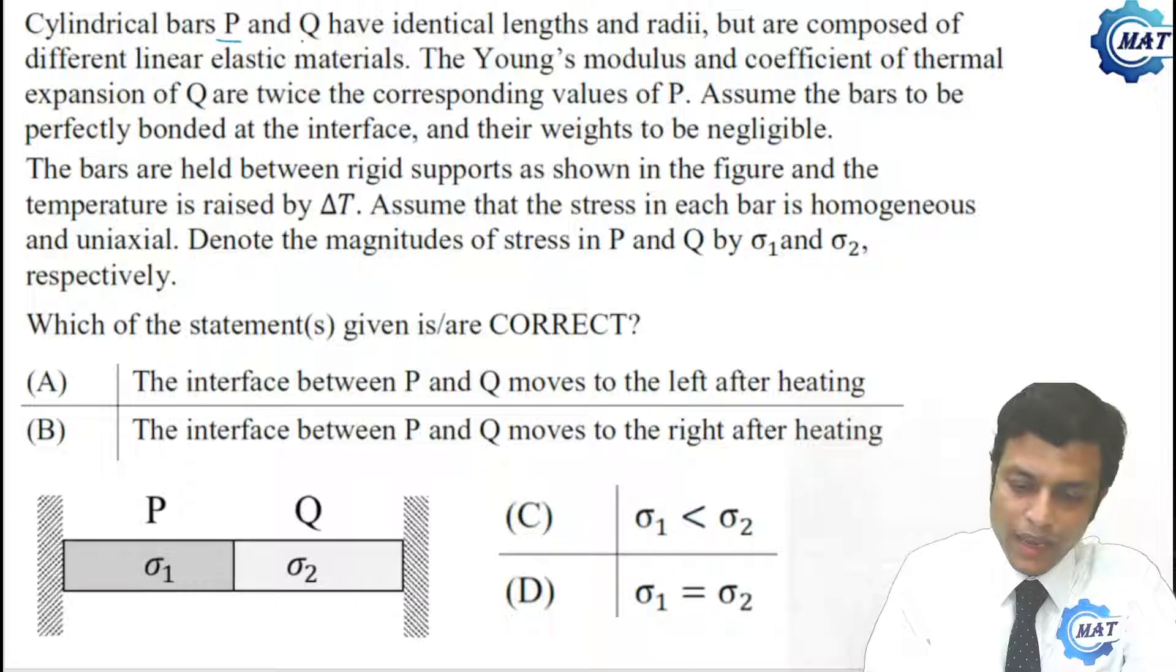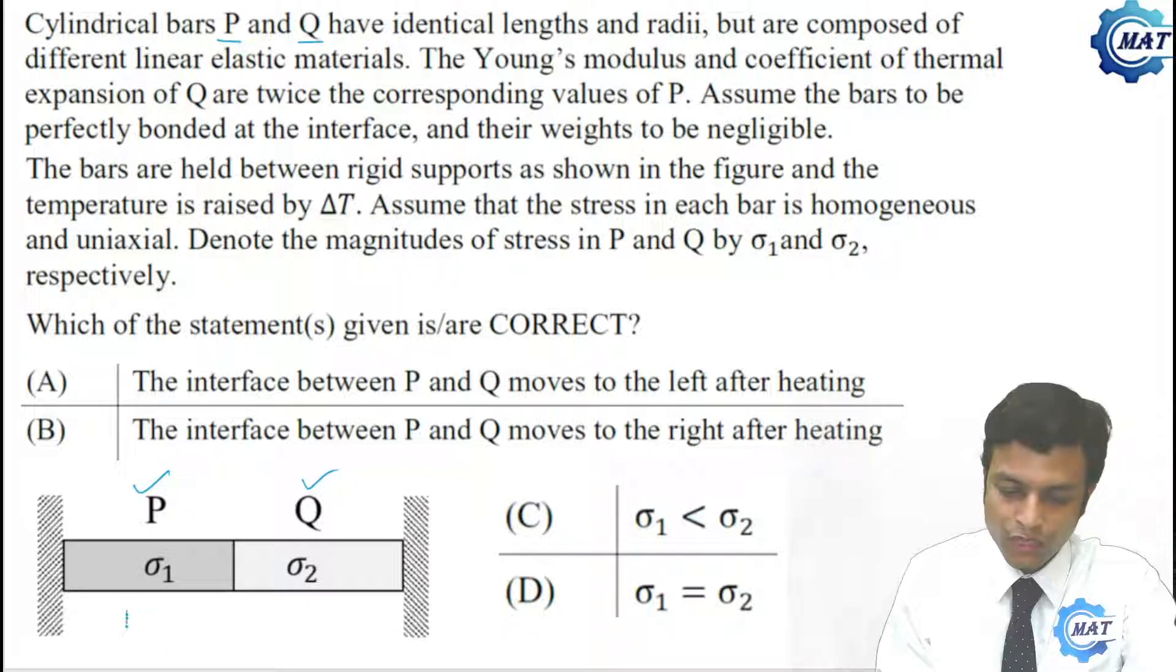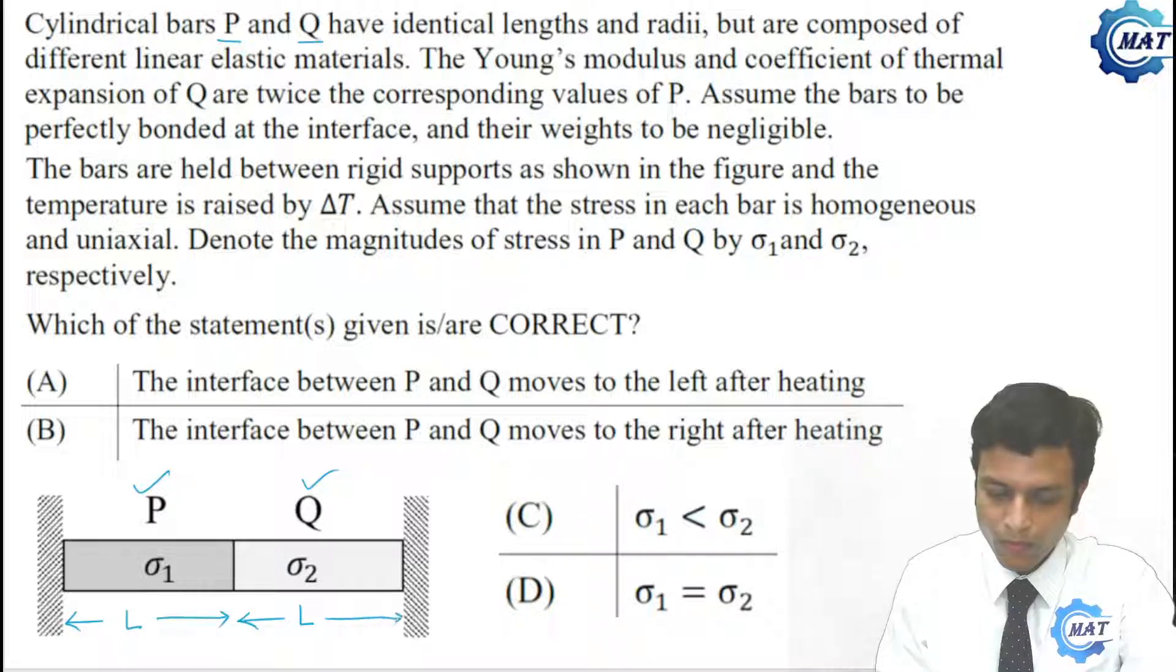Cylindrical bars P and Q, this is P and this is Q, have identical lengths, both having same length say L, and radius. That is, both having the same cross-sectional area, say A.